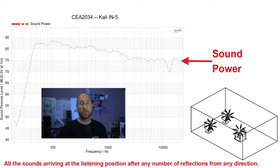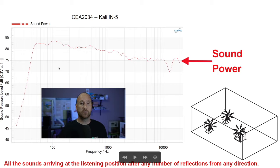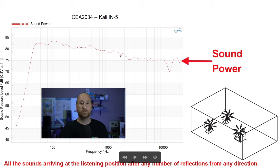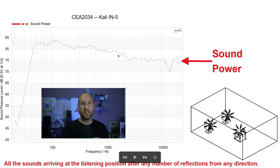There are other things to look for — generally speaking, you want a smooth response for each of these. Where the line is picking up and moving around erratically, that isn't ideal. It indicates resonances or directivity errors between a mid-woofer and a tweeter.